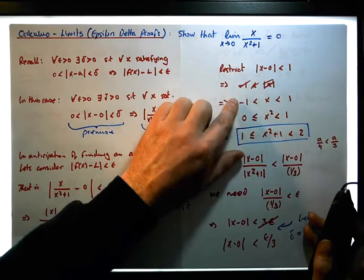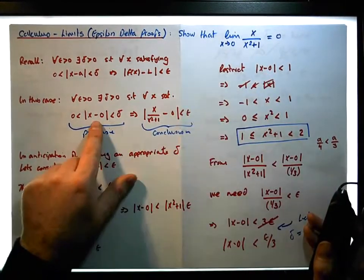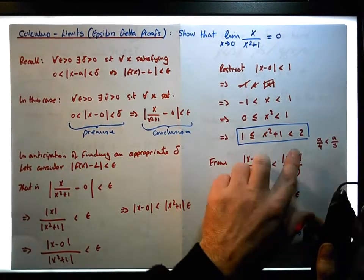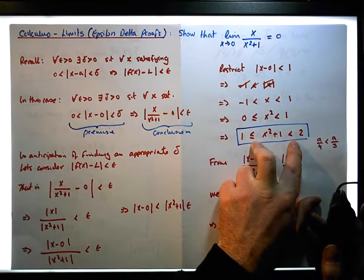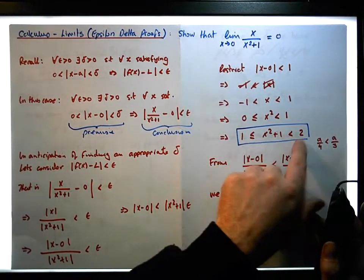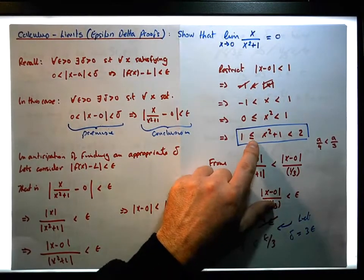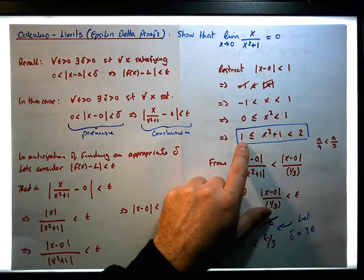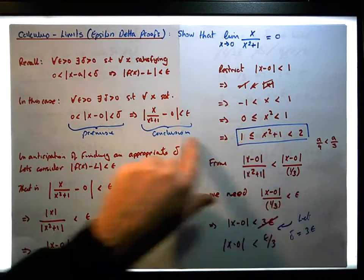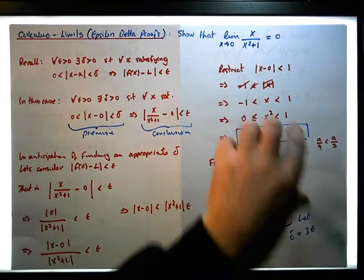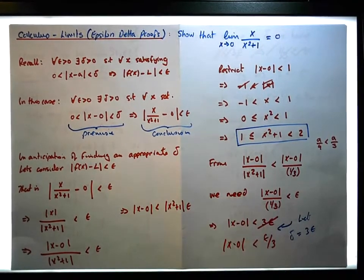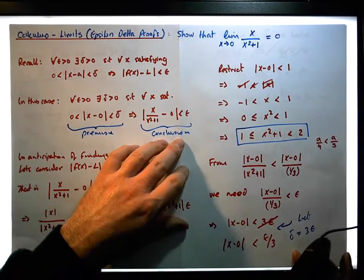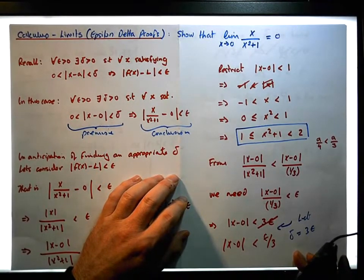The difference is that when we restricted the absolute value in the premise, we ended up with an inequality on a half-open interval — closed below and open above. It was important to find a number less than x squared plus one, but not one itself since that's equal to it — any number strictly less than one suffices. This helped us find an appropriate delta. Thanks for watching!